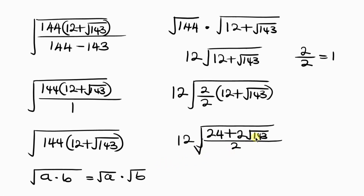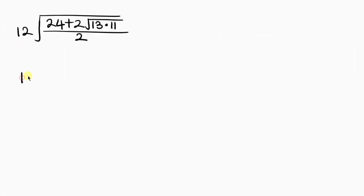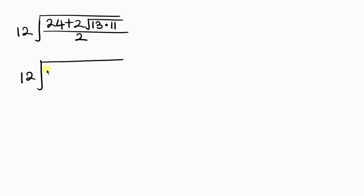Our next step is to split 143 into two factors. 143 is the same as 13 times 11. So we have 12 times the square root of 24 plus 2 times the square root of 13 times 11, all over 2. And now I want to write 24 in terms of 13 and 11: 24 equals 13 plus 11.